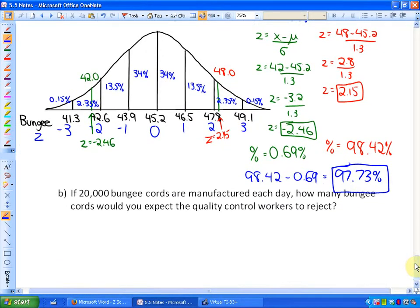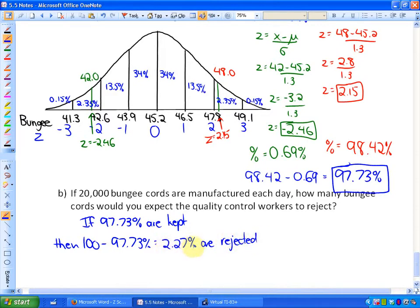Here's question B. If 20,000 bungee cords are manufactured each day, how many bungee cords would you expect the quality control workers to reject? So if 97.73% are kept, my thinking would be that if I do 100 minus that, that would be a total of 2.27% are rejected. So we know that roughly 2 out of every 100 bungee cords are rejected, or more specifically, 2.27 out of every 100.